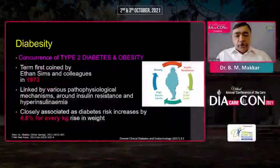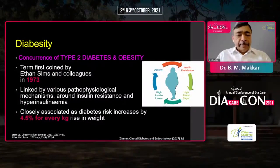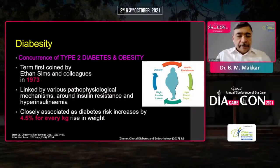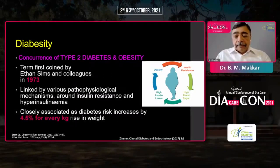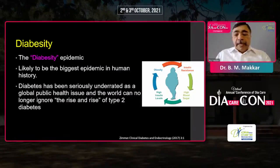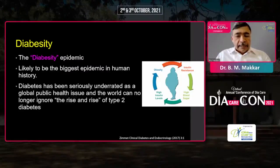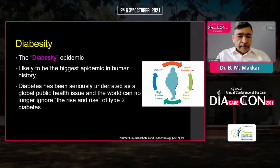There is a very strong correlation between weight gain and development of disease, and every kg increase in weight is associated with about 4% increase in the risk of diabetes. So we have currently the twin epidemic of type 2 diabetes and obesity. I would also like to clarify that the term diabetes in this presentation is being used synonymously with type 2 diabetes.